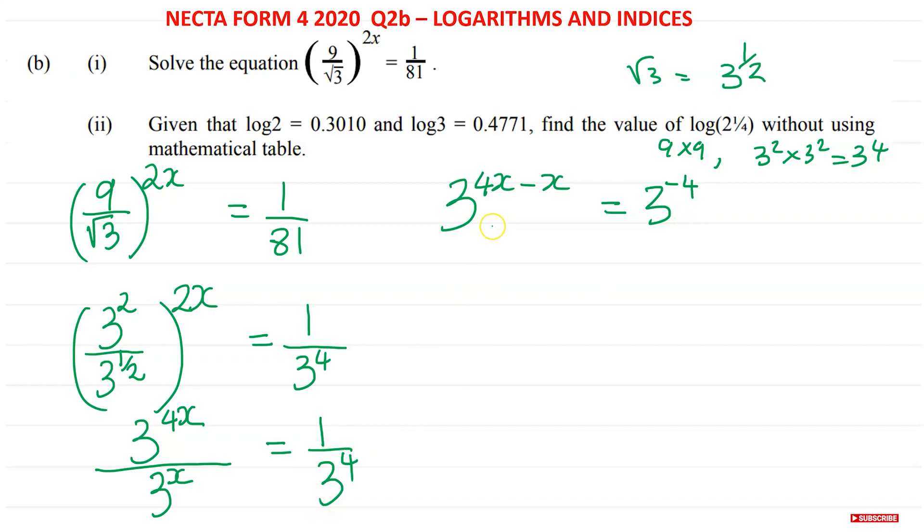Let's go ahead and subtract. We have 3^(4x - x), that's going to give you 3x, equals 3^(-4). Now because these numbers have the same base and they are equal, this means their powers are also equal. So we can now say 3x, that power, must be equal to negative 4.